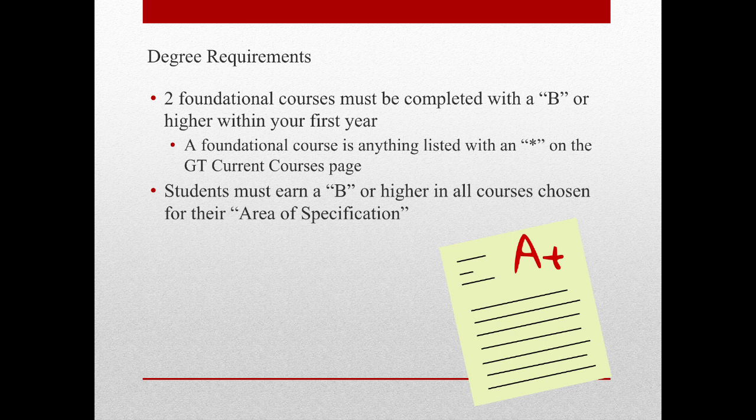For degree requirements, the main requirements I found were: one, that within your first year you must complete two fundamental courses — a list of fundamental courses can be found under current courses on the Georgia Tech OMSCS page shown with an asterisk, and links will be in the video description. And two, students must earn at least a B grade in all courses that are area of specification courses. For me, that means the courses I chose for my concentration in machine learning. For you, it'll depend on what you choose for your concentration area. There are more requirements; these are just the ones I found to be the most immediate.